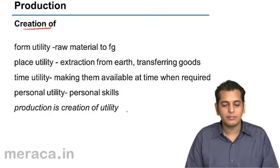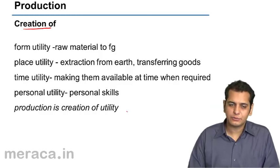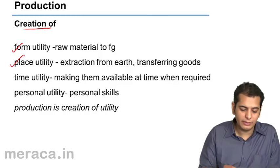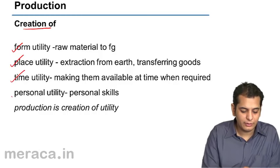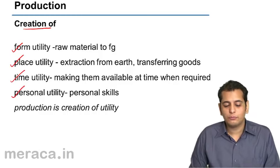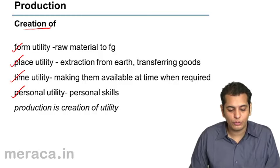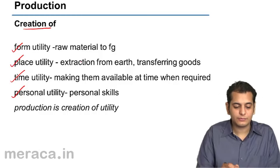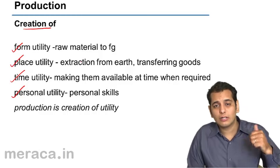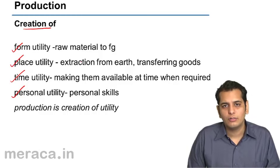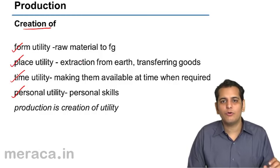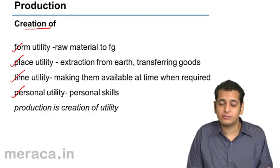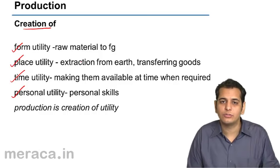Production is the creation of utility. Utility means the usefulness of a product — it is the want-satisfying capacity of a product. Utility is of four types: first, form utility; second, place utility; third, time utility; and finally, personal utility. Form utility is changing the form of a good — changing the form of a particular thing and converting it into something else, something other than what it actually was.